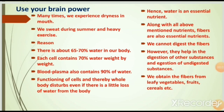Quick recap: Many times we experience dryness in mouth; we sweat during summer and in heavy exercise. There is about 65 to 70 percent water in our body; each cell contains 70 percent water weight by weight. Blood plasma also contains 90 percent water. Functioning of cells and the whole body is disturbed with even a little loss of water — hence water is an essential nutrient. Along with other nutrients, fibers are also essential. We cannot digest fiber, but they help in digestion and elimination of undigested substances. We obtain fibers from leafy vegetables, fruits, and cereals.